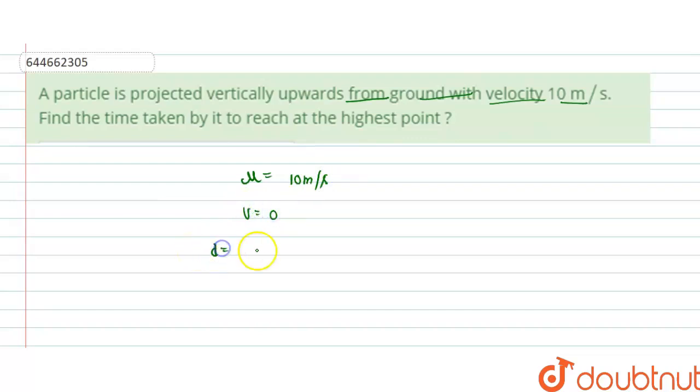Acceleration a equals g, that is 10 meters per second squared, as the ball is thrown upside.